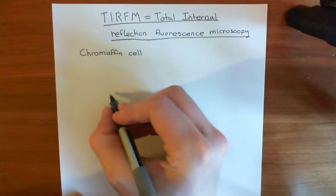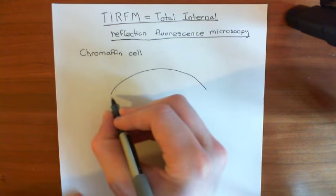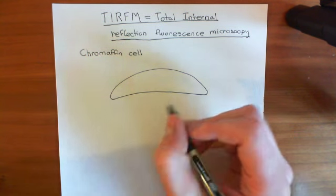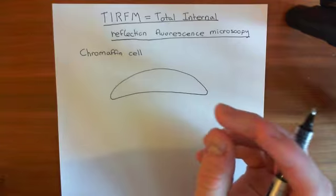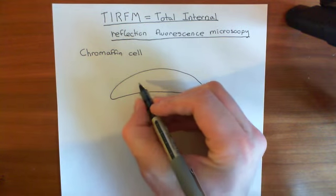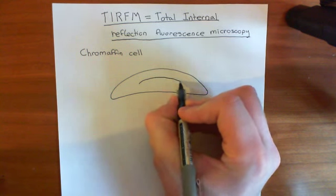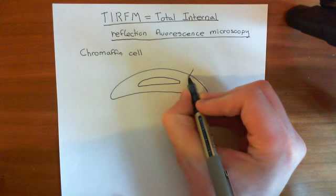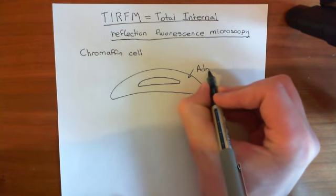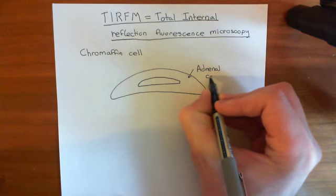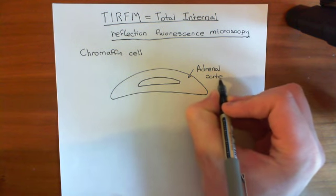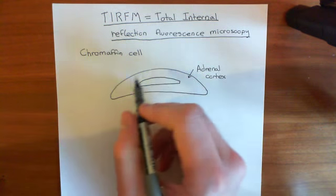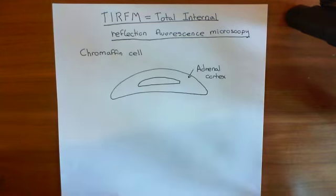The adrenal gland — if I draw a little adrenal gland here — kind of looks like this. These are the glands that sit atop the kidney, so you have two adrenal glands, one above each kidney. Roughly, the adrenal gland can be divided into two portions: the adrenal cortex, which is the outer portion. 'Cortex' is the word used in Latin for the outer shell of something, the peripheral shell.